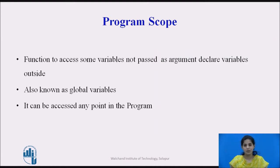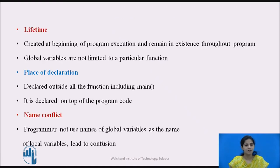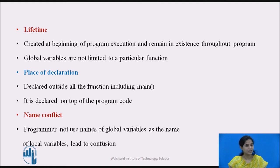Now we see the program scope. If we want a function to access some variables that are not passed to it as arguments, then we declare those variables outside any function block. Such variables are known as global variables and can be accessed from any point in the program. Global variables are created at the beginning of program execution and remain in existence throughout the entire execution of the program. They are not limited to a particular function.